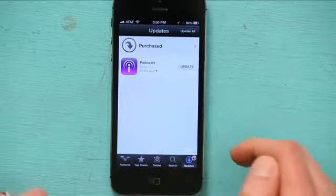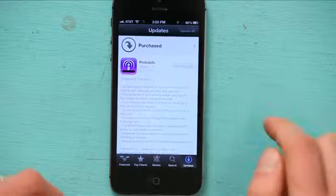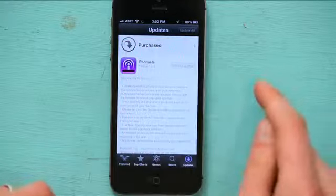So I can update my podcast app, which I'm actually going to do right now, and up at the top is Purchased. Let's tap that. Under Purchased, I'll see a list of all the apps I've ever downloaded from the App Store. That includes things I've bought and things that were free.